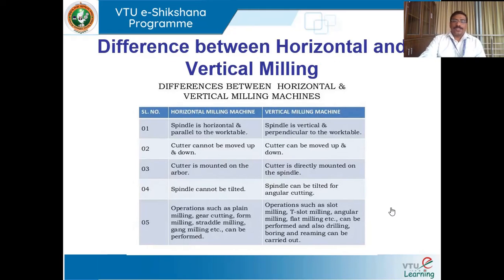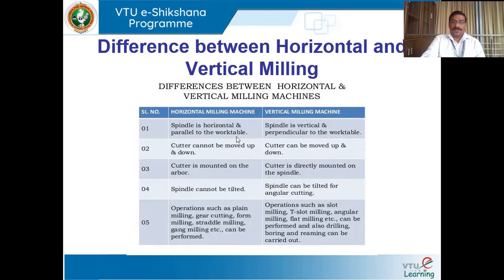Here are the differences between a horizontal and a vertical milling machine. In a horizontal milling machine, the spindle is horizontal and parallel to the work table. In a vertical milling machine, the spindle is vertical and perpendicular to the workpiece. In the horizontal machine the cutter cannot be moved up and down — it is fixed at a particular position and can only rotate on its own axis, with no longitudinal, transverse, or vertical movement.